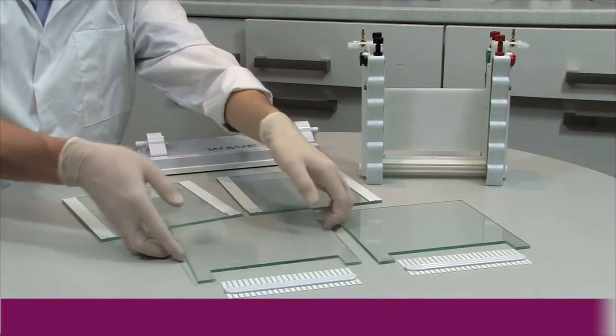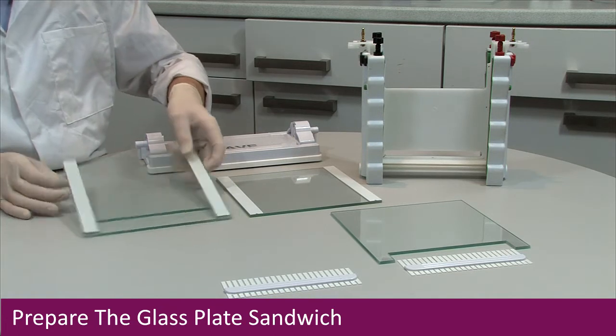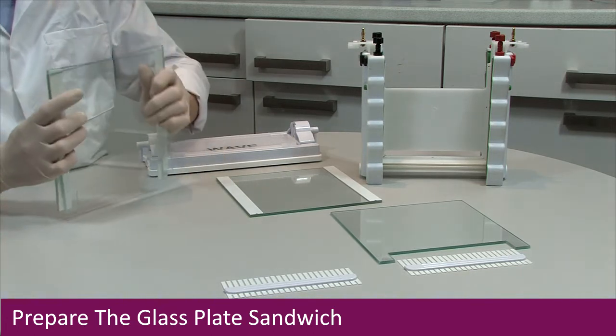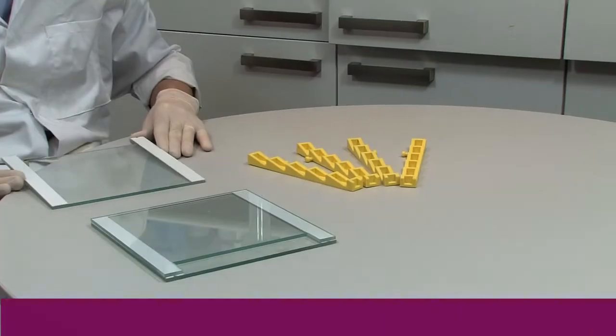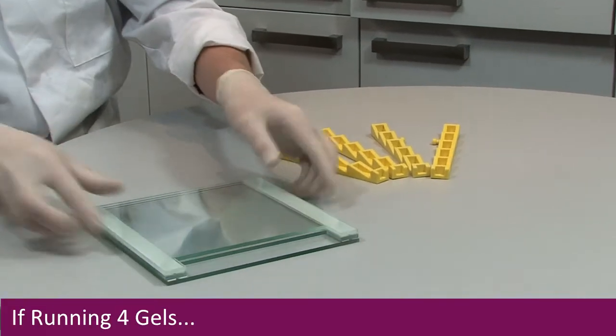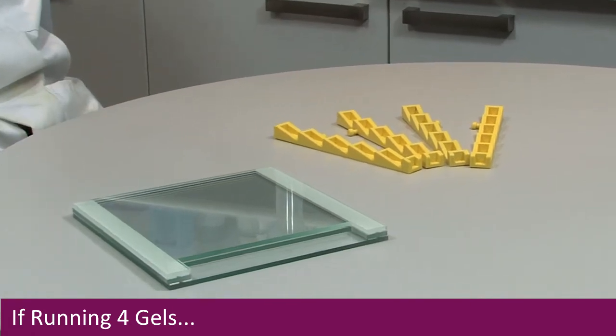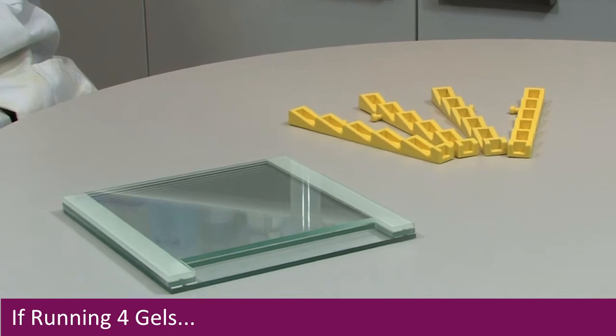Ensure that all components are clean, dry and free of any chips or cracks before making a glass plate sandwich. If running four gels instead of two, position a notched glass plate with bonded spacers over the single gel sandwich. Also use the thinner yellow clamps in the casting upstand.